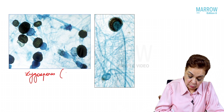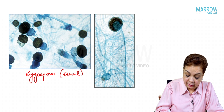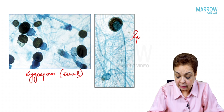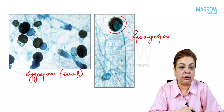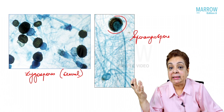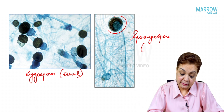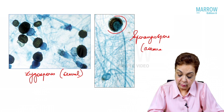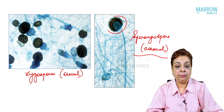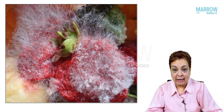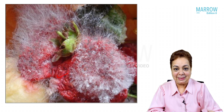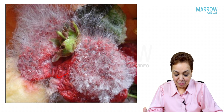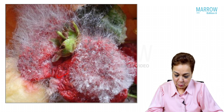Their asexual spores arise on a special stalk called a sporangiophore, at the end of which is a sac-like structure containing many sporangiospores. This is the asexual spore of zygomycetes. You can see Mucorales (bread molds) growing on a strawberry — the woolly hyphae are clearly visible.